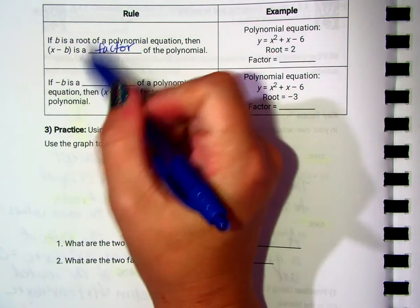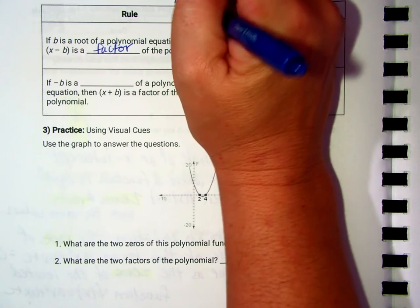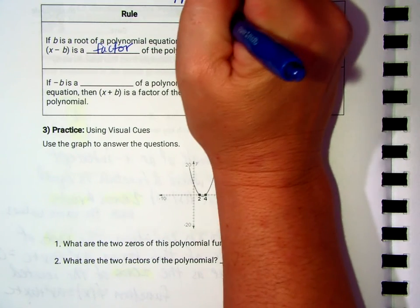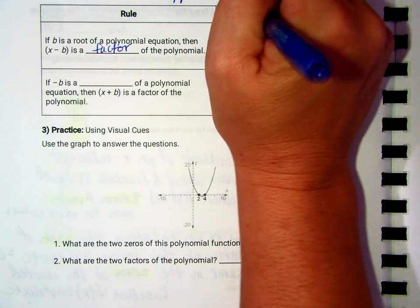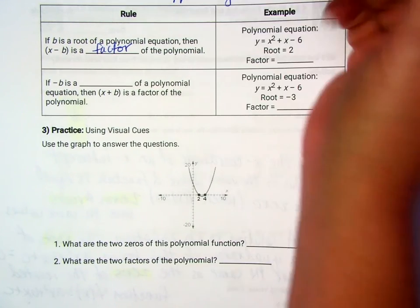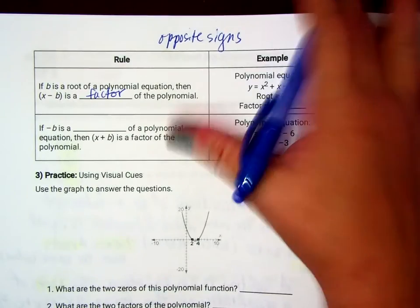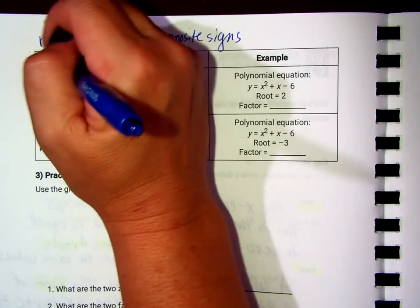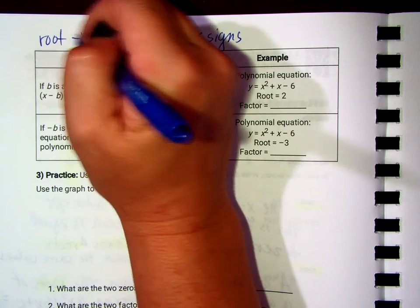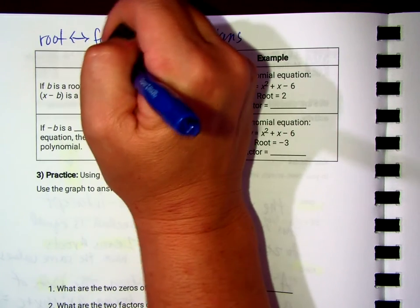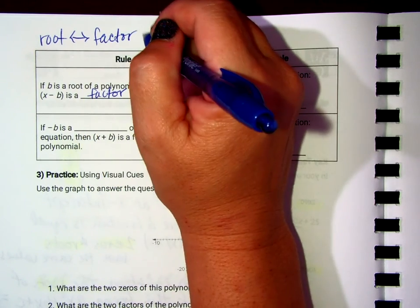If b is a root of a polynomial equation, then x minus b is the factor of the polynomial. Notice that the root and the factor have opposite signs.